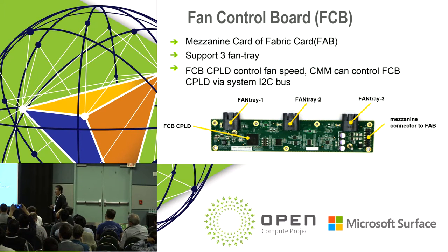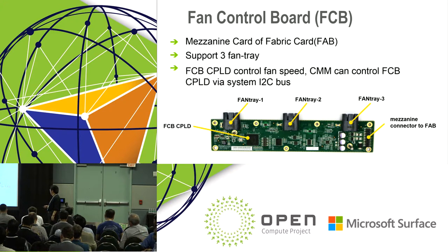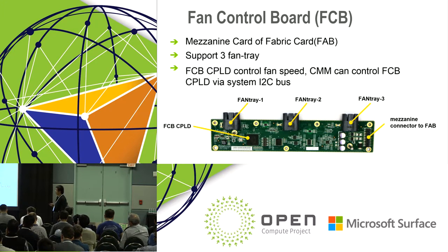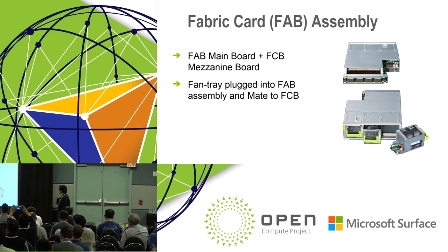Fan control board: the fan control board is a mezzanine card of the fabric card. It supports three fan trays — 80mm × 80mm fan trays. We use a CPU I/O to control the fan PWM and read fan speed status. The CPU I/O is managed by the CMM's BMC. The fabric card assembly has fan trays that plug in from the rear side and are hot-pluggable.